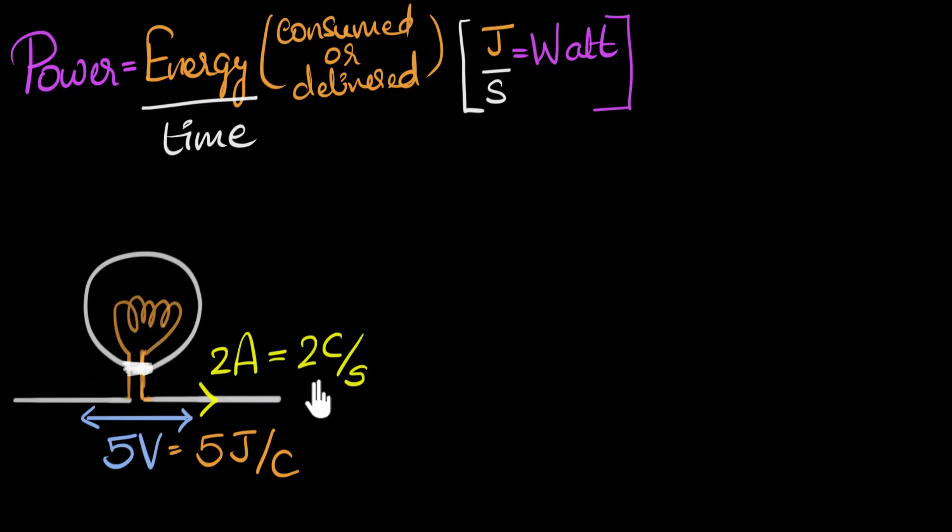And in one second, two coulombs are passing through it. So, using these two numbers, can we calculate how much energy, how many joules of energy is being consumed by the bulb every second? Pause the video and see if you can try and do this yourself.